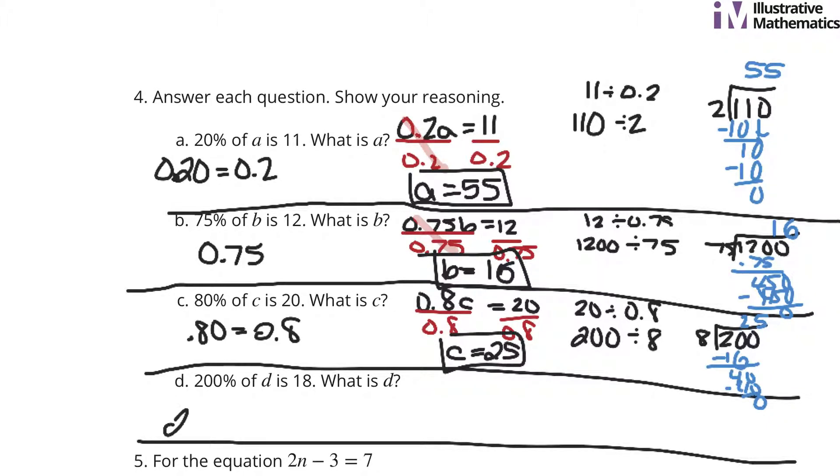200%, so 2.00 or just 2 is 200%. Of D is 18. What is D? So 2D equals 18. Easiest question so far. Divide by 2 on both sides. This cancels out. 2 divided by 2 is 1. And now you're left with D equals 9.